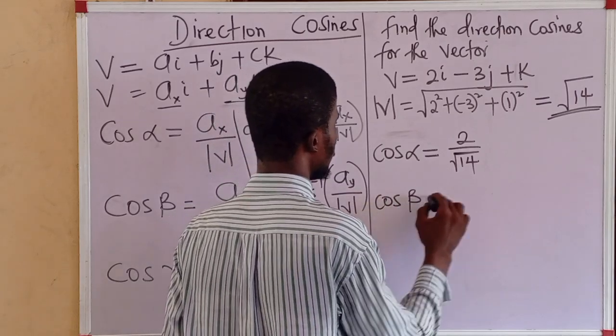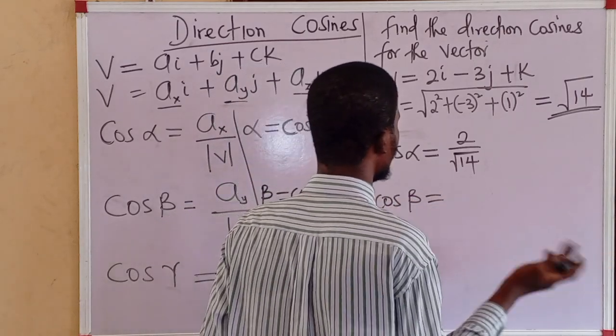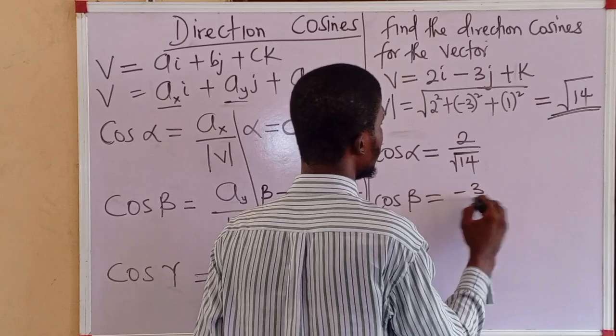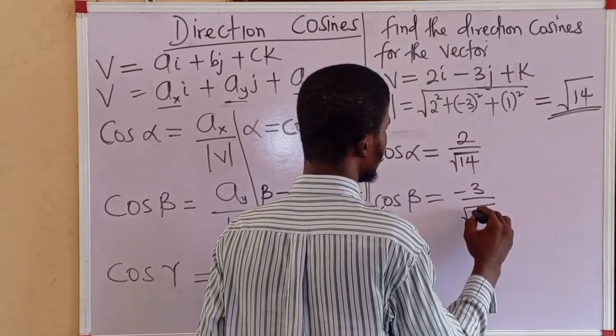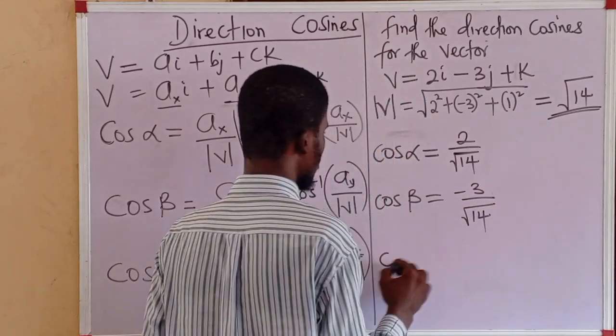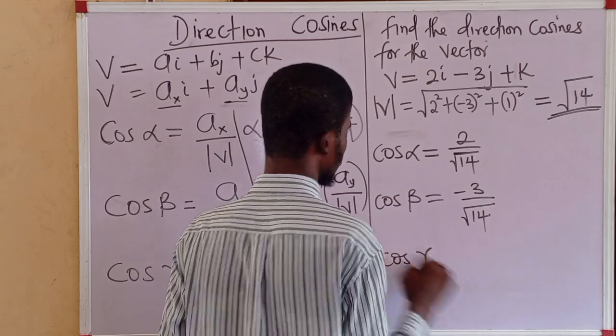Then, cos beta. This is for the y axis now. We have minus 3 all over root 14.